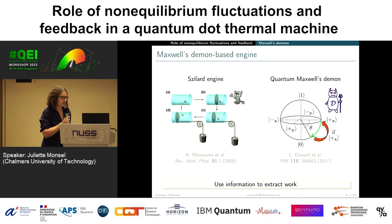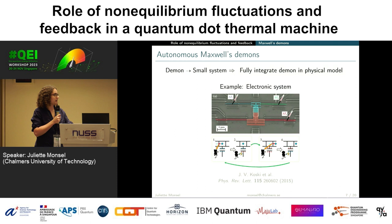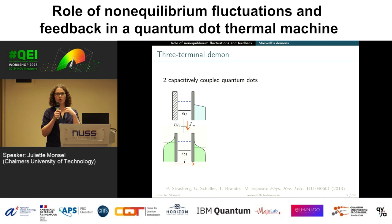What I want to focus on is not Maxwell demons in general, but more the autonomous kind, where the demon is actually a small system that can be modeled in the same framework and the same physical model as the rest of the setup — like in this experiment from Finland, where the demon is a small single electron box. The specific kind of demon I want to look at is one implemented with quantum dots. A quantum dot here is a single energy level coupled to some electronic reservoir, where electrons are hopping in and out of this level from the reservoirs with some tunnel rates.